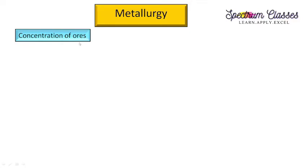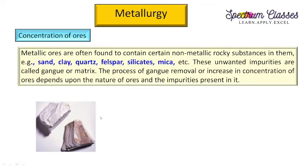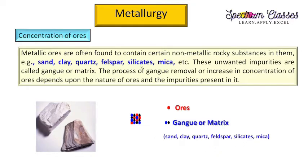Let us start with the concentration of ores. Concentration of ores means removal of unwanted rocky substances like sand, clay, quartz, feldspar, silica, mica etc. from the ore to increase the concentration of metal in that ore. For example, suppose the red particles show the ore particles and the blue and black show the gang or matrix particles in the form of sand, clay, quartz, feldspar, silica etc. Removal of these gang or matrix particles from the ore to increase the concentration of the metal is called concentration.